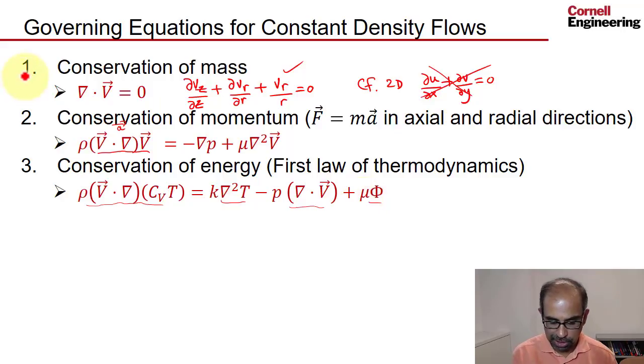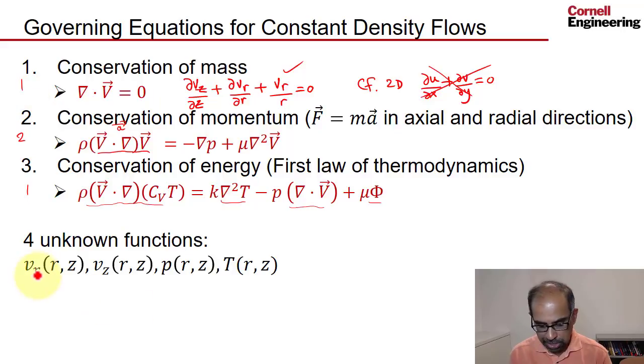So we have four equations: one equation here, there's actually two equations because you have a radial component and an axial component, so you have two scalar equations, and you have one equation here. So you have four equations and you have four unknown functions because density is known.